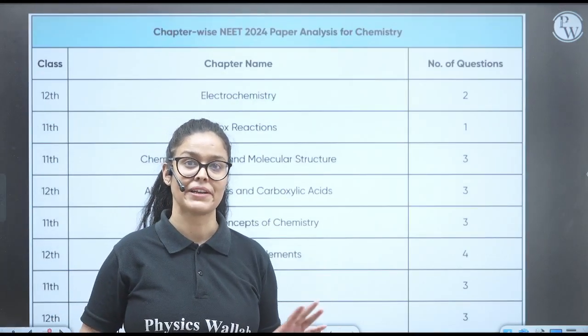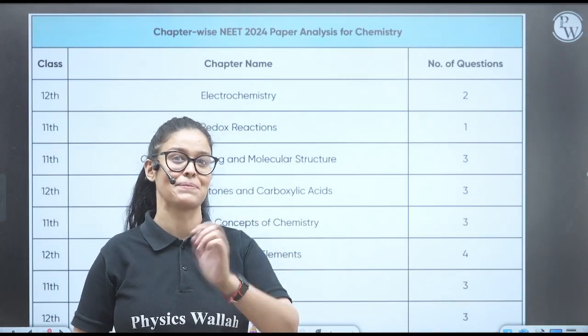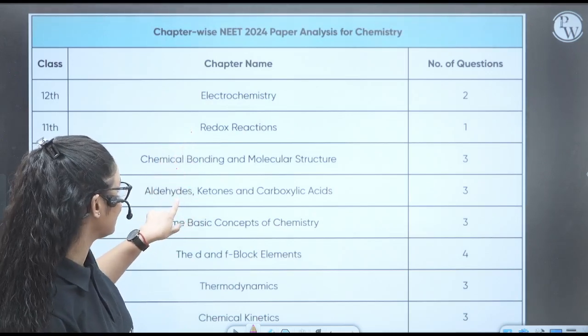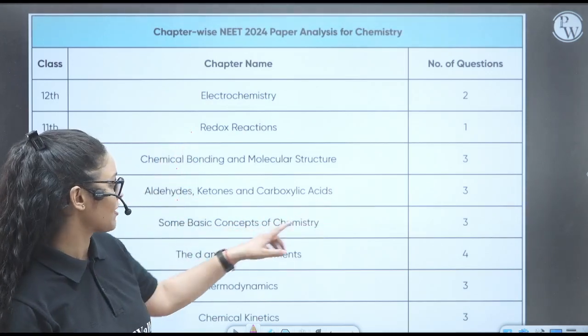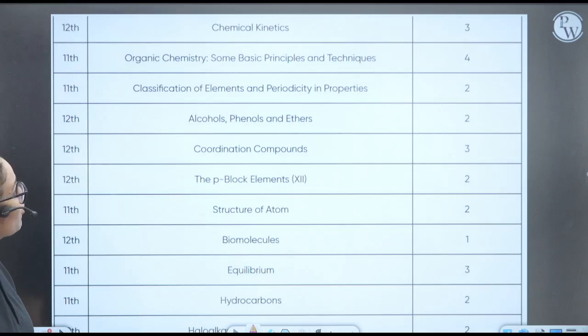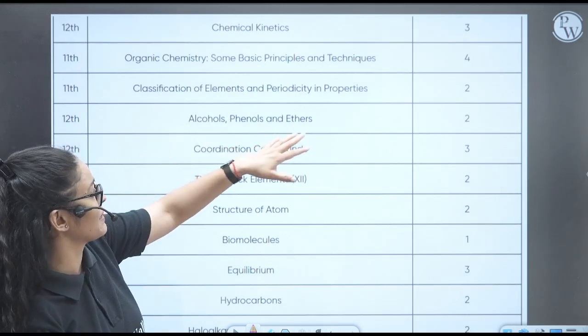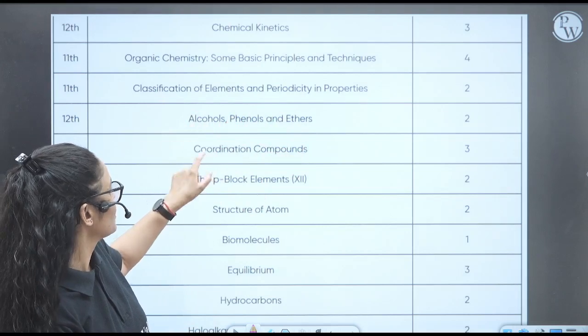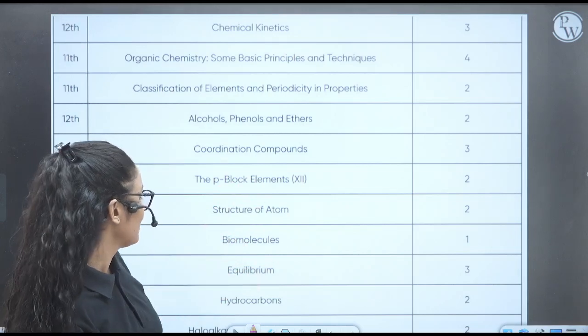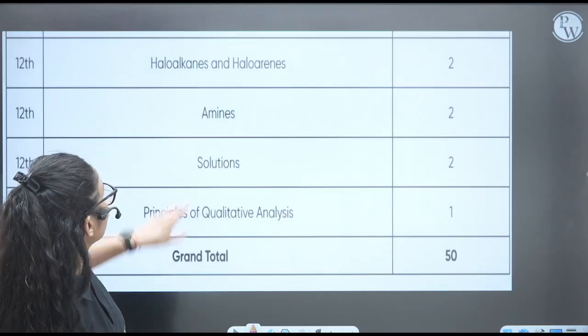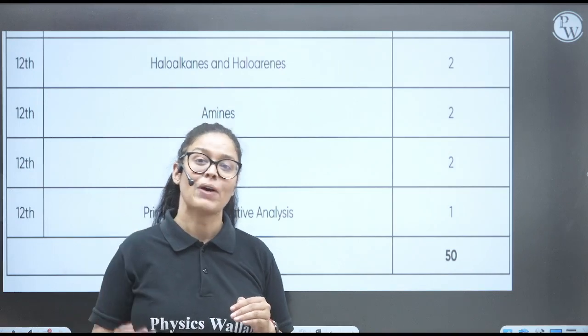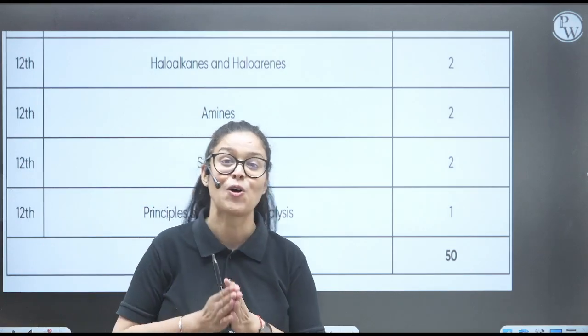Now see the chemistry paper, right? So first of all electrochemistry - they have asked two questions. Redox reaction - one. Chemical bonding - three. Aldehyde ketone carboxylic - three. Some basic concepts of chemistry - three. D and F block - four. Thermodynamics - three. Chemical kinetics - three questions. Organic chemistry - four questions. Classification of elements and periodicity - two. Alcohol - two. Coordination compound - three. P block - two. Structure of molecules - one. Equilibrium - three. Hydrocarbon - two. Haloalkane and haloarenes - two. Amines - two. Solution - two. Principles - one. So this was the distribution of the questions chapter-wise in chemistry, right?